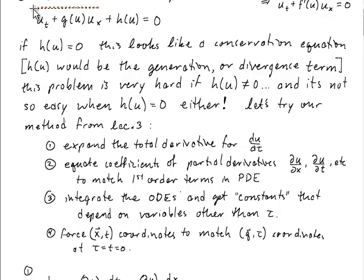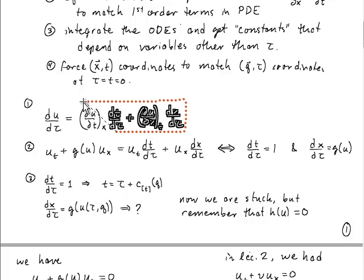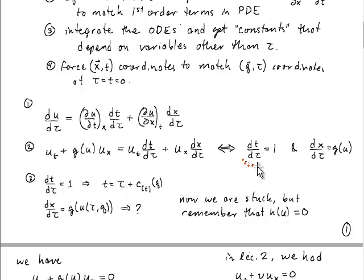Remember, this is the PDE that we want to solve, u_t + g(u)u_x = 0. Okay, so if we do the first step, du/dτ, expand that in partial derivatives, multiplied by the rate of change of t with respect to tau, and x with respect to tau, then we can recognize that for the group of first order derivative terms in our PDE to be equal to the thing on the right hand side of this total derivative, I have to choose that dt/dτ equals 1, and dx/dτ is g of u.